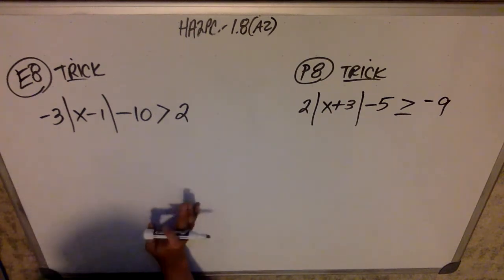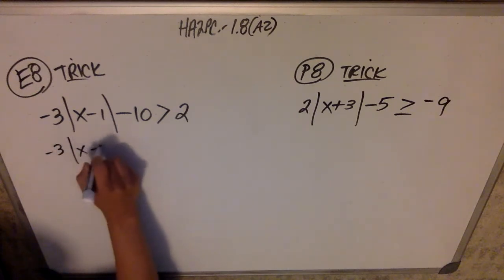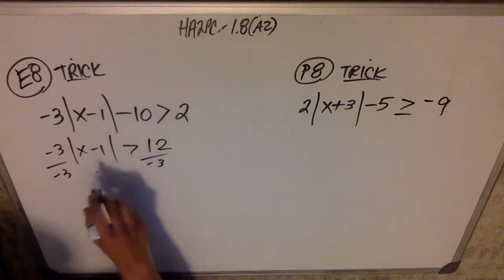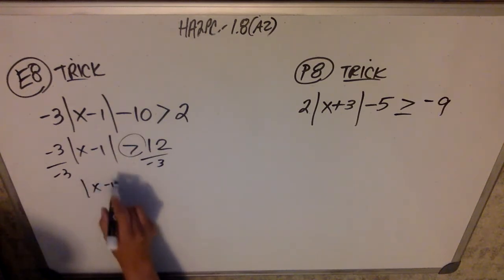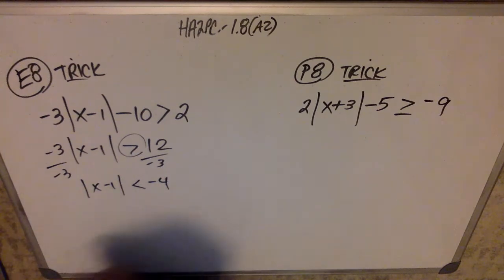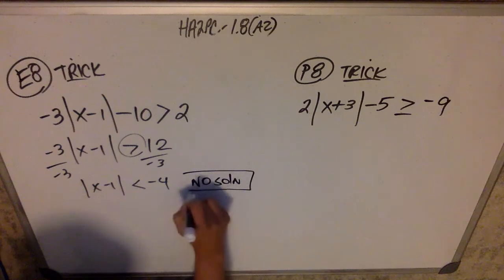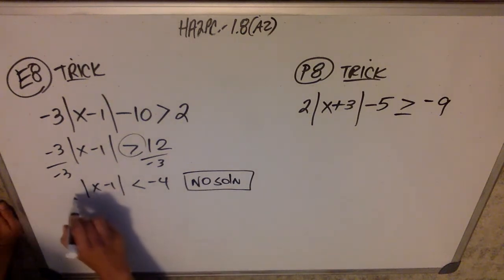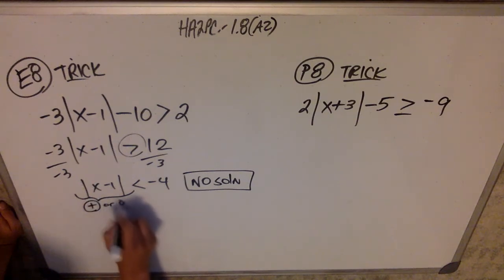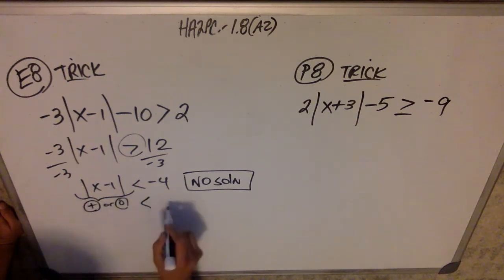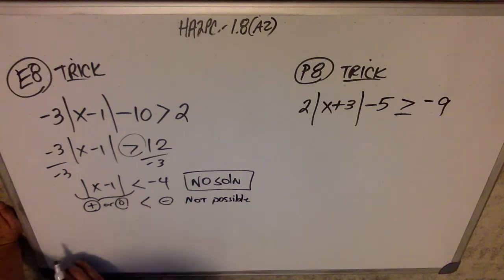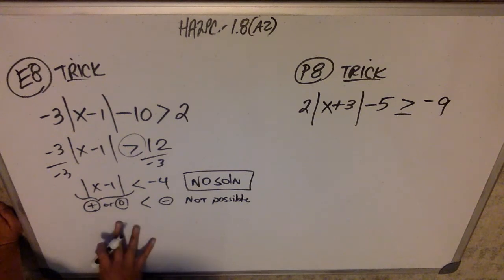For E8, I'll solve it as though I didn't know it's a trick. Adding ten to both sides: negative three times the absolute value of x minus one is greater than twelve. Dividing by negative three — flipping the sign — gives the absolute value of x minus one is less than negative four. At this moment I know the answer is no solution, because the absolute value is always positive or zero, and we're saying positive or zero is less than a negative number — that's just not possible.